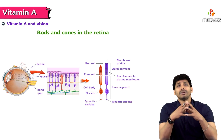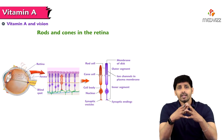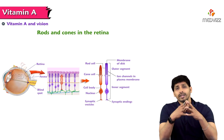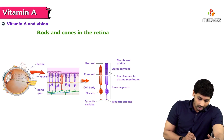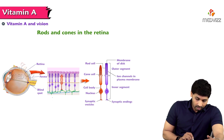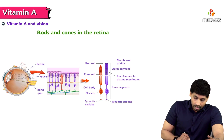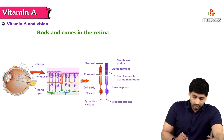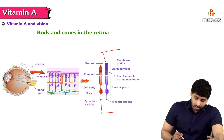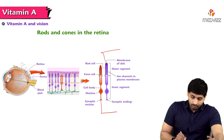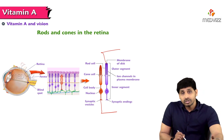Rod cells are made up of a visual pigment called rhodopsin. To make rhodopsin, we require Vitamin A — specifically the retinoid in aldehyde form, called retinal. In the diagram, you can see the retina of the eye, its membranes, rod cells shown in blue, and cone cells shown in orange.